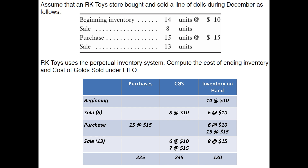Inventory on hand after that sale is 6 units at $10. Then we bought 15 more at $15. So now we have 6 left from beginning at $10 and 15 more at $15. Then we made a sale of 13 — using FIFO we use the oldest first, so all 6 remaining from beginning inventory go, and we still need 7 more from that purchase of 15 at $15. That leaves 8 units from that purchase at $15 each, which equals $120 ending inventory, and total cost of goods sold adding up the column gives us $245.